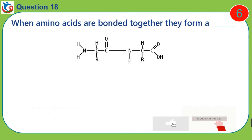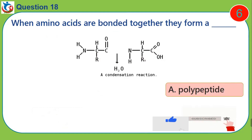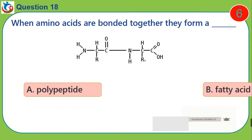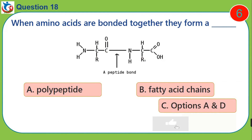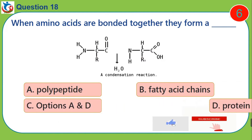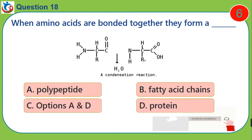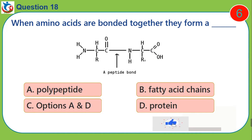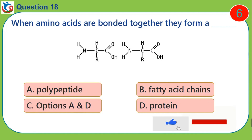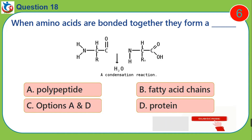Question 18. When amino acids are bonded together, they form a dash. A. Polypeptide. B. Fatty acid chains. C. Options A and D. D. Protein.